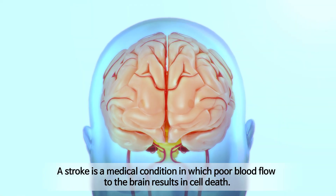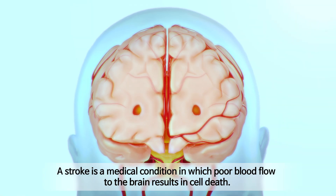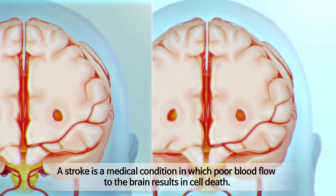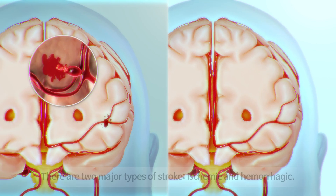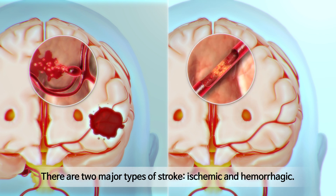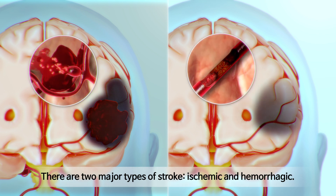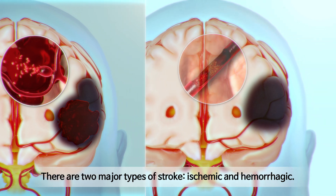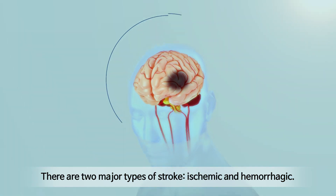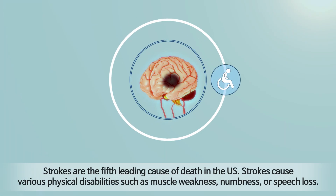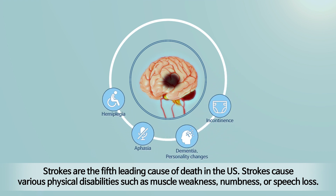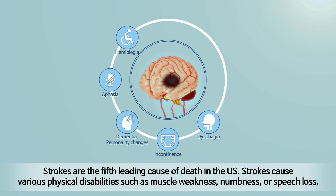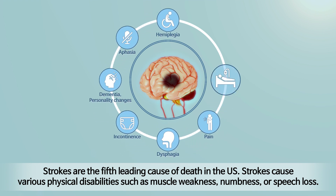A stroke is a medical condition in which poor blood flow to the brain results in cell death. There are two major types of stroke: ischemic and hemorrhagic. Strokes are the fifth leading cause of death in the U.S. and cause various physical disabilities such as muscle weakness, numbness, or speech loss.